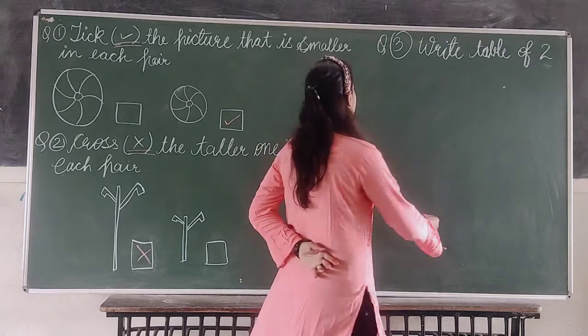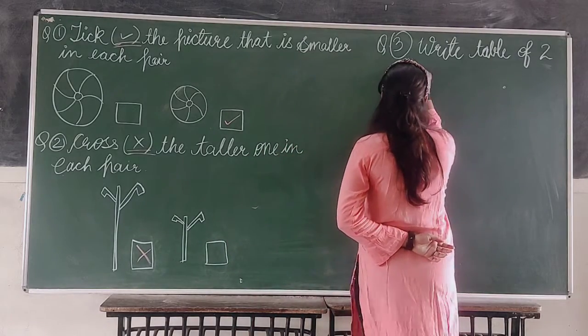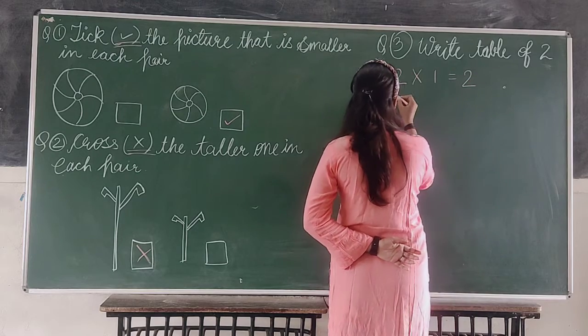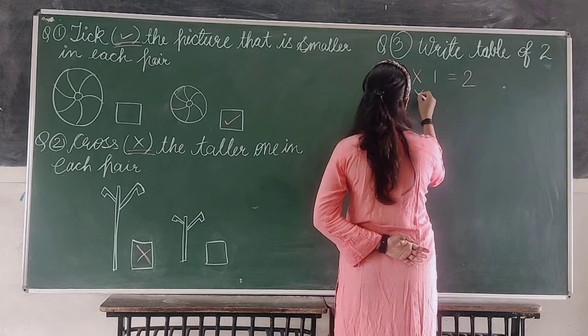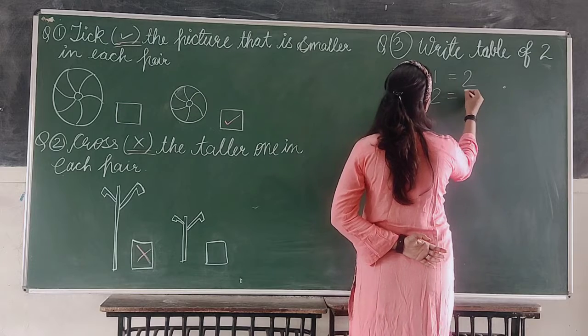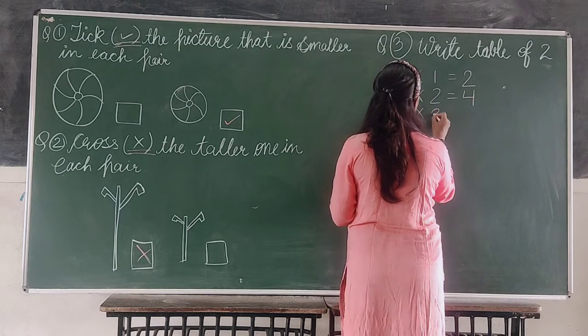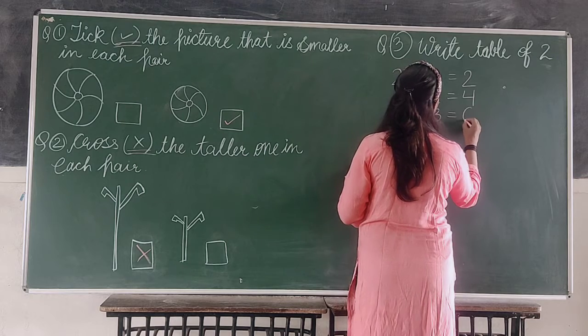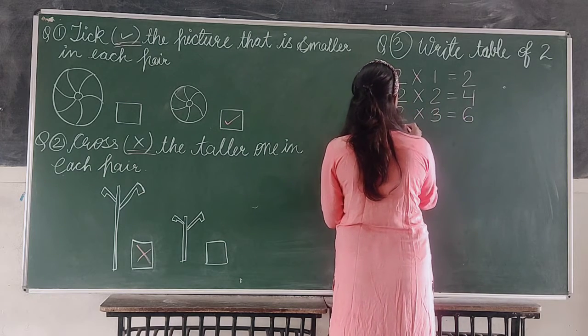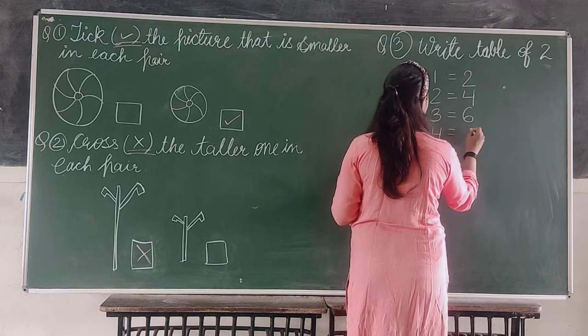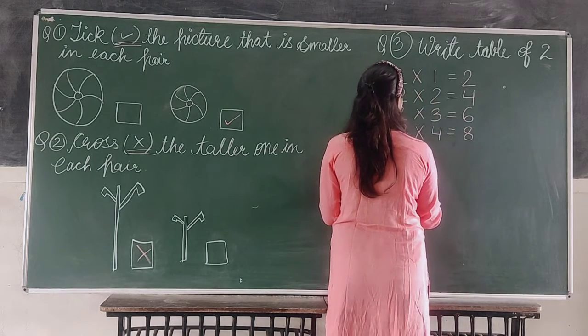Okay. Come on, write with me. Two into one equals to two. Two ones are two. Two into two equals to four. Two twos are four. Two into three equals to six. Two threes are six. Two into four equals to eight. Two fours are eight.